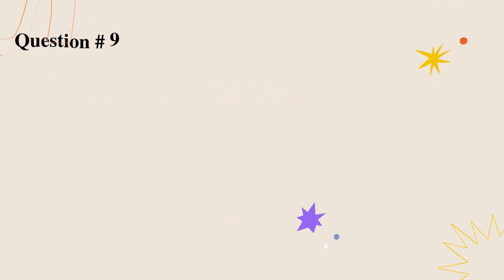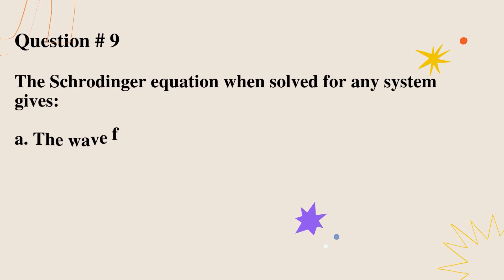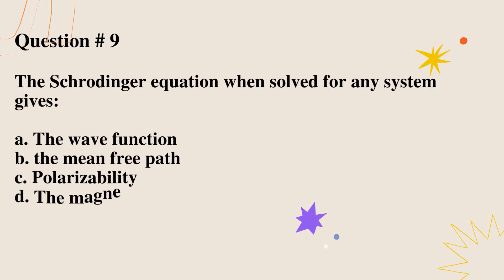Question number 9. The Schrödinger equation, when solved for any system gives: A. The wave function. B. The mean free path. C. Polarizability. D. The magneto-gyric ratio. Correct option is A.